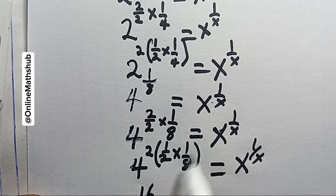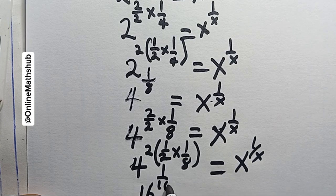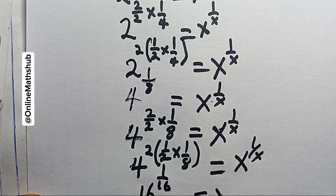Then 2 power, 4 power 2 here is 16, power 1 over 2 times 8 here is 16, and this will be equal to x power 1 over x.